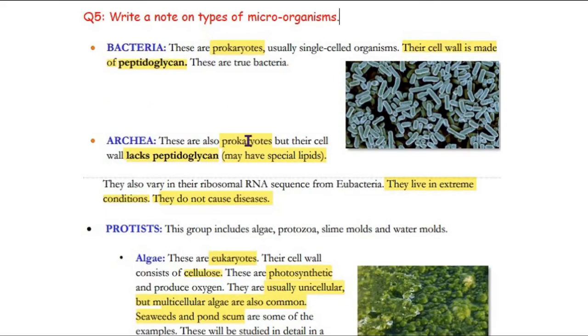The first type is bacteria. Bacteria and archaea - you know these two were kept in one group, but then they were kept in separate domains. Bacteria and archaea are both prokaryotes. The difference is that bacteria have peptidoglycan, archaea don't have peptidoglycan, but they may have some special lipids.